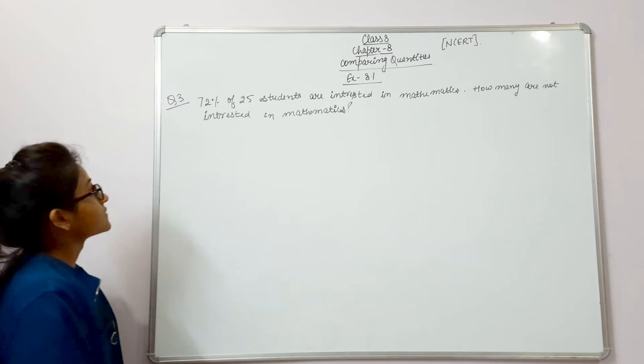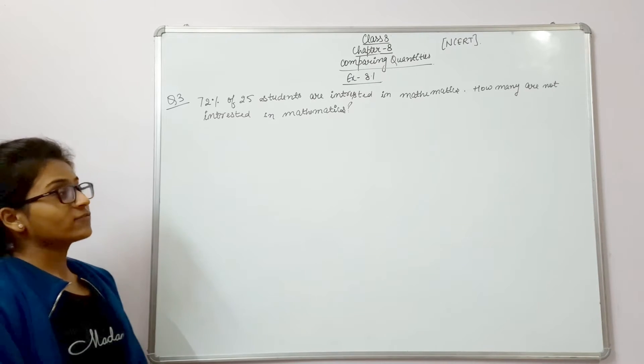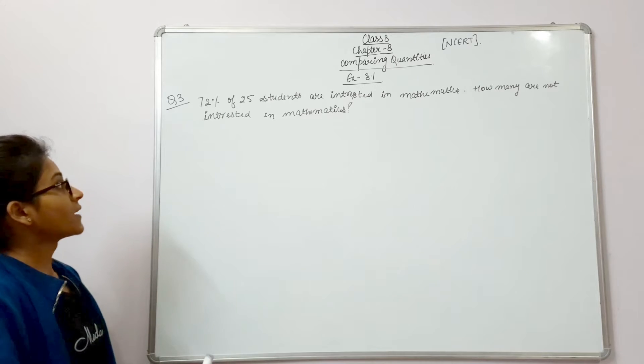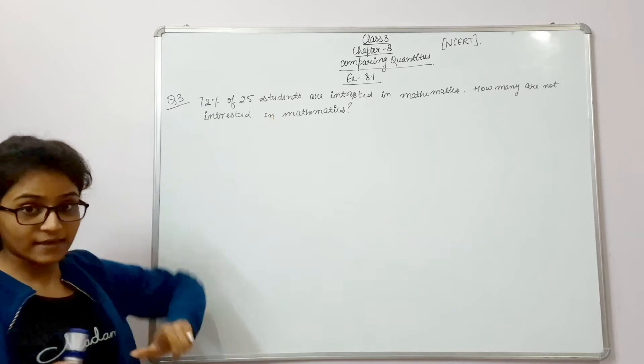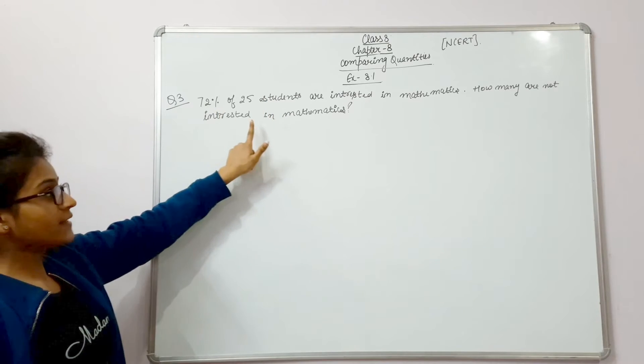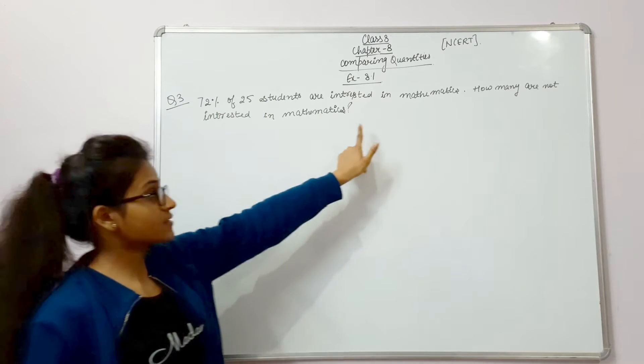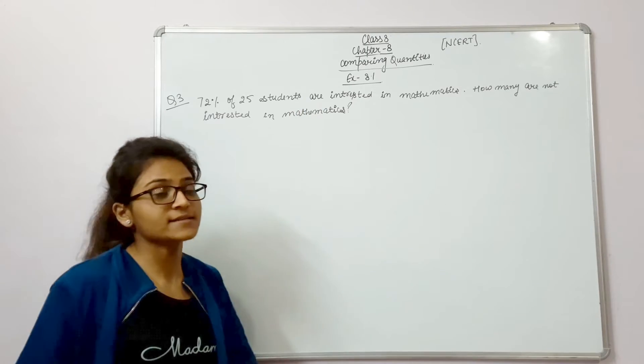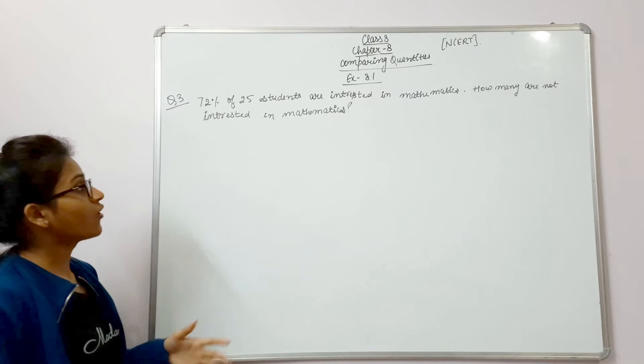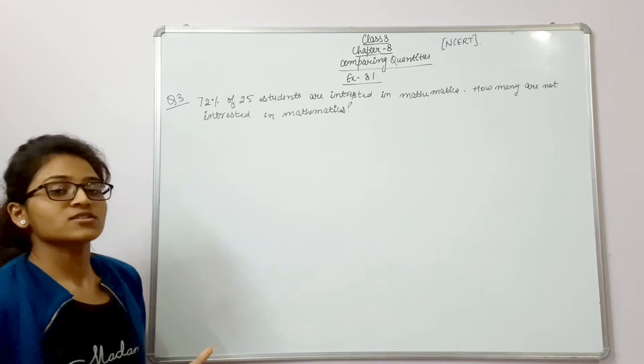We start with 72% of 25 students. This means that 72% of 25 students are interested in mathematics. How many are not interested in mathematics?